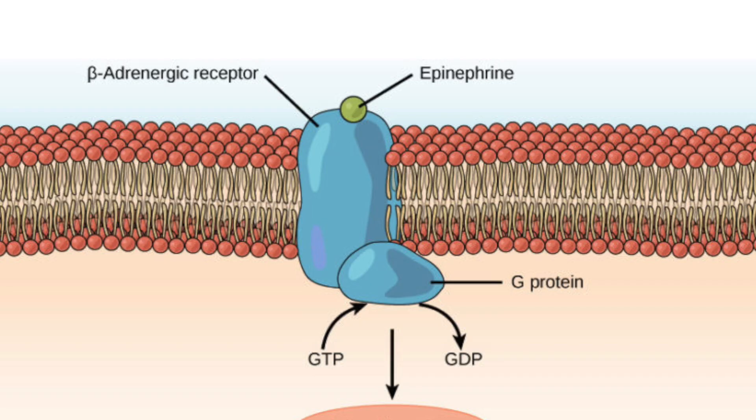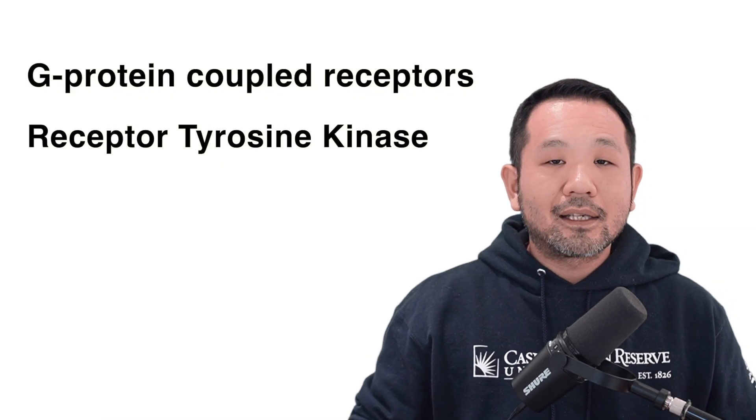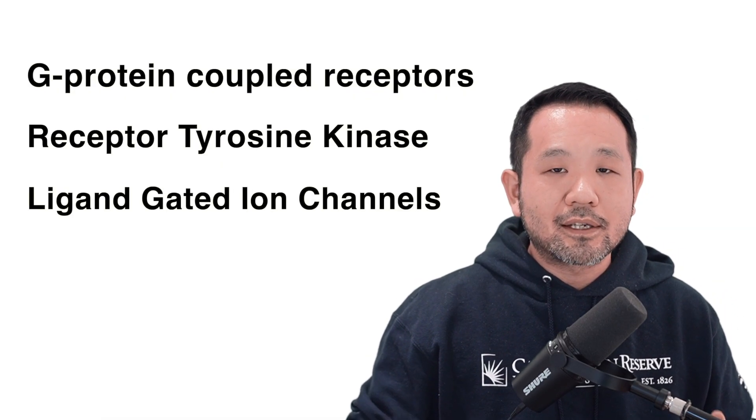Chapter 11.2 is about reception. A ligand, or signaling molecule, must be received by a receptor. Given that the ligand is water-soluble — traveling through the bloodstream or open water — the receptor must be a transmembrane protein, or membrane-bound receptor, because water-soluble things are not likely to cross the phospholipid bilayer. Therefore, the receptor has a ligand-binding site facing the outer portion of the membrane. There are three major receptor types: GPCRs (G-protein-coupled receptors), RTKs (receptor tyrosine kinases), and ligand-gated ion channels.